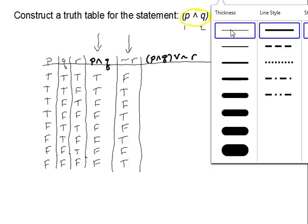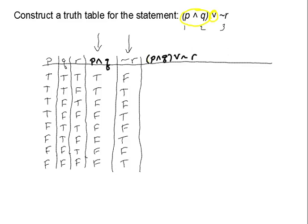Remember the disjunction — the 'or' statement — is true when either one of the statements is true. Going down: true or false is true; true or true is true; false or false is false; false or true is true; false or false is false; false or true is true; false or false is false; and last but not least, false or true is true.